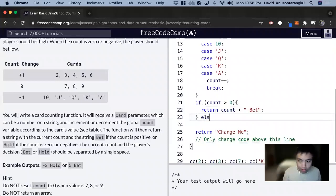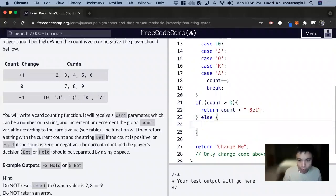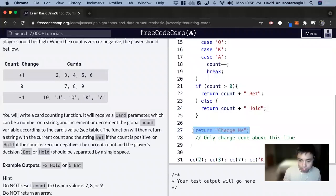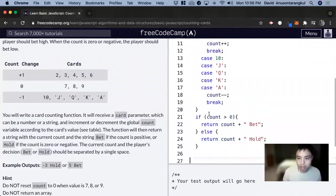Else if it's equal to 0 or negative, we return count plus the string hold. And we can get rid of this line. And that'll be it.